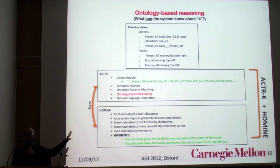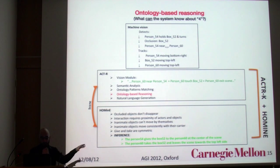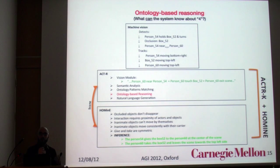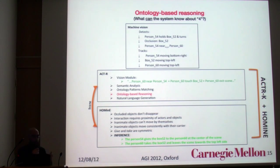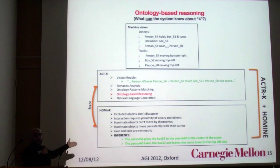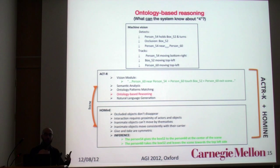This is the pipeline of the general reasoning performed. HOMINI provides the knowledge — the axioms — needed to make the inference: objects don't disappear from the scene, interaction requires proximity, inanimate objects cannot move by themselves, and so on. You can then infer with a certain degree of probability that there has been an exchange between person 54 and person 60.